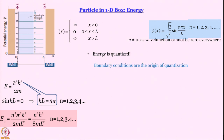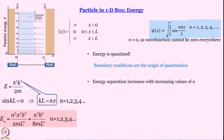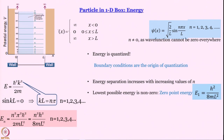Let us summarize what we have learnt. The key concept is that quantization originates in boundary conditions, which come from the requirement that ψ·ψ* is the probability density. Energy separation increases with increasing n. The lowest possible energy is non-zero because n cannot equal 0 — this is called the zero-point energy, which for the particle in a box is h²/8mL².